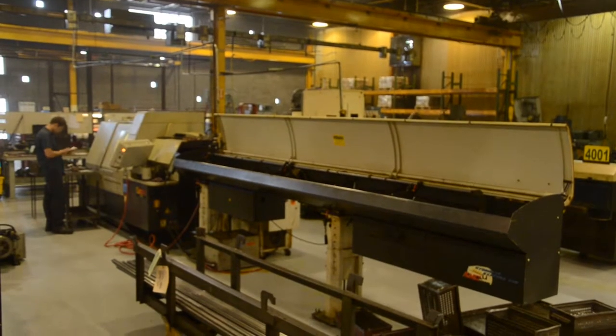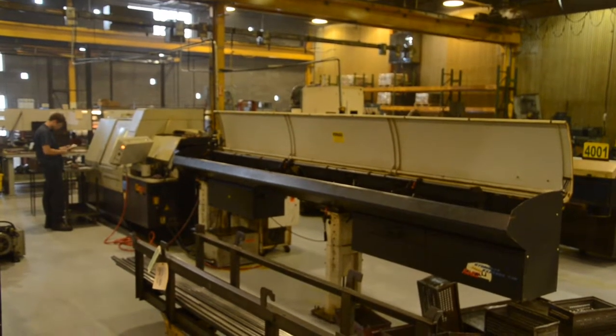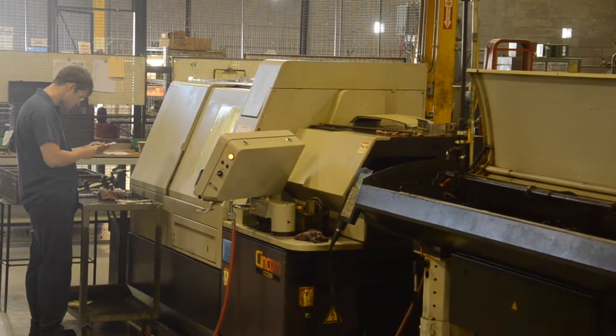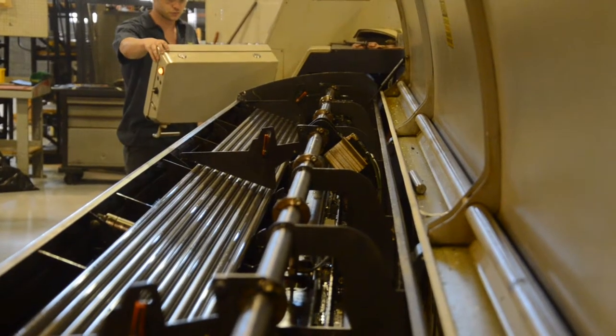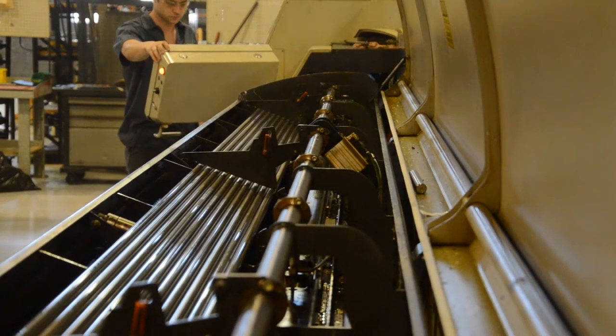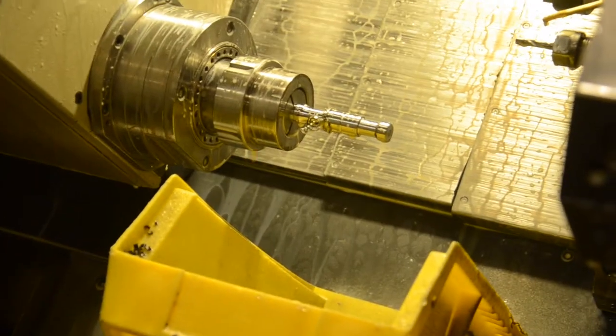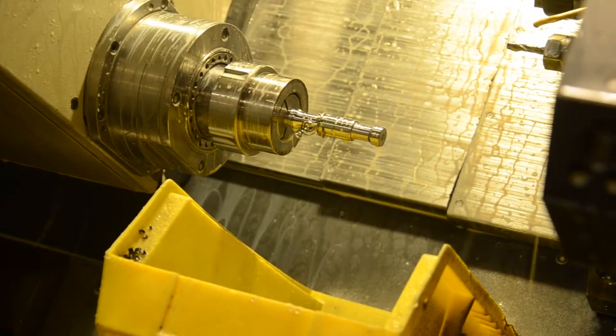Swiss-style CNC lathes were originally designed to build watch components and are the perfect machine for manufacturing long, thin parts. This machine uses a sliding headstock and fixed guide bushing that supports the part very close to the cutting tool. This minimizes part deflection, resulting in very tight tolerances being held.